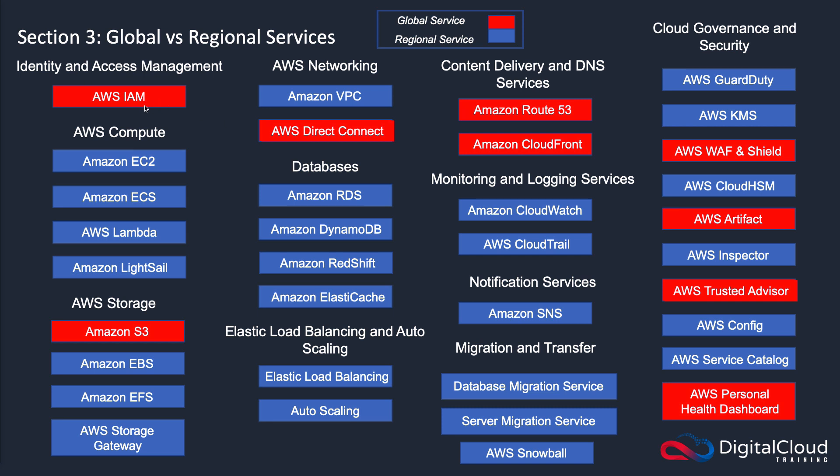With Identity and Access Management, you create your users in one place — you don't create them in different regions. However, with regional services such as Amazon EC2, you deploy your virtual servers into specific regions.